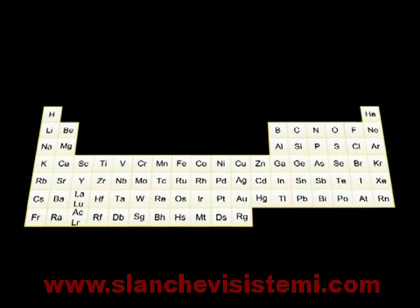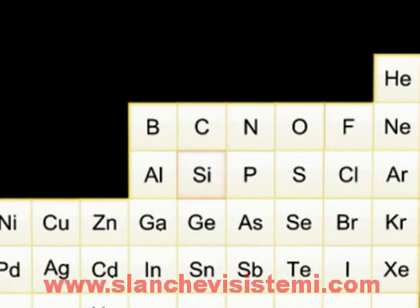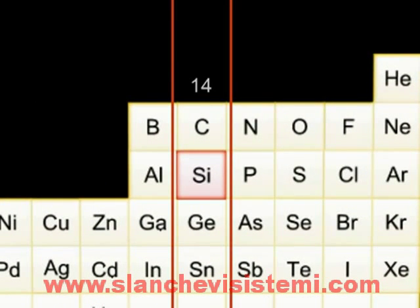When looking at the periodic table, we see that silicon is part of group 14 and is situated between aluminum and phosphorus. A silicon atom has 2 electrons in its first shell, 8 electrons in a second shell, but only 4 electrons in its outer shell. The outermost electrons are called valence electrons, and all silicon atoms consist of not more than 4 valence electrons.